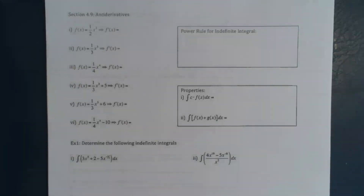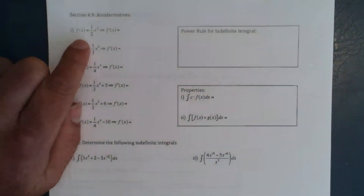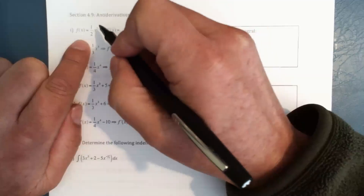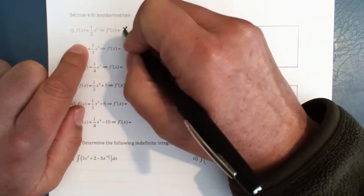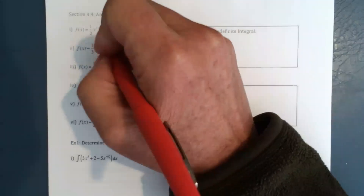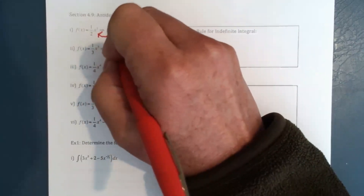Welcome back to the last section in Chapter 4. We are going to be going in the opposite direction of a derivative, which is called an anti-derivative. So if we have this function and we want to go backwards to find out what has a derivative of this function — remember, you bring the 2 down, it cancels, we just end up with x — that means if this is the derivative, going the other way is called the anti-derivative.